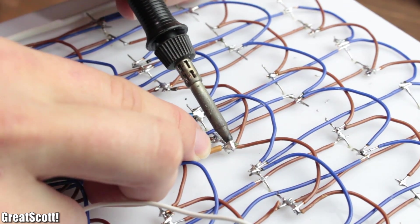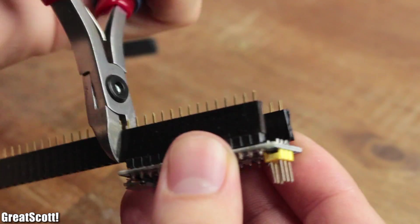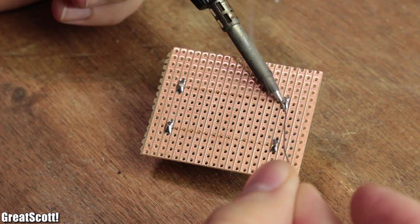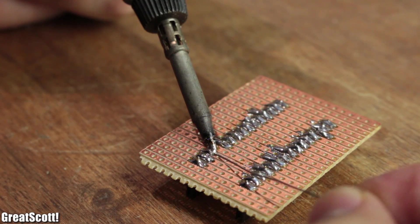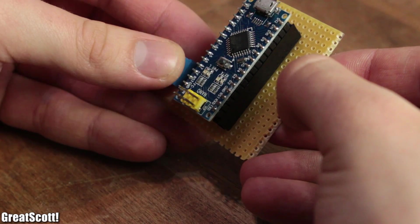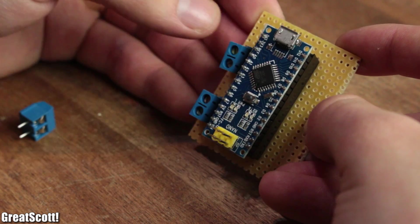Then I created fitting female headers and a piece of strip board for my Arduino Nano. Soldered those headers in place and interrupted the copper traces between them.